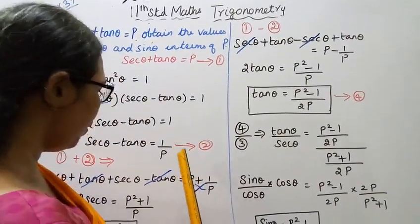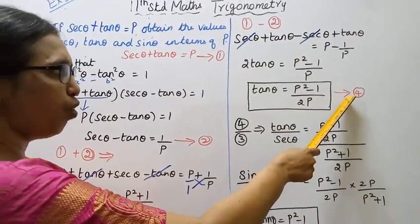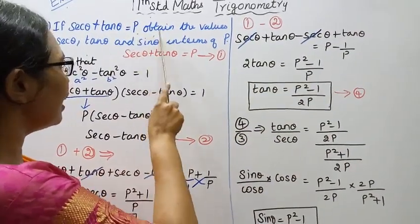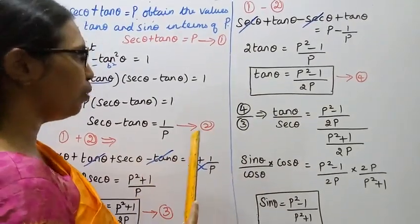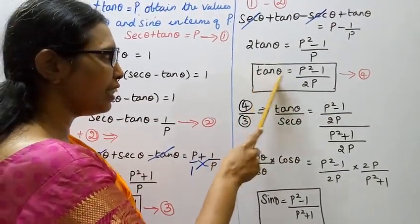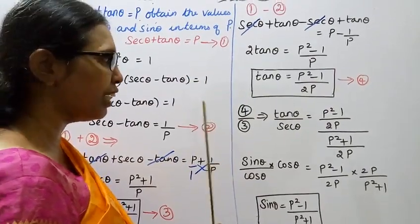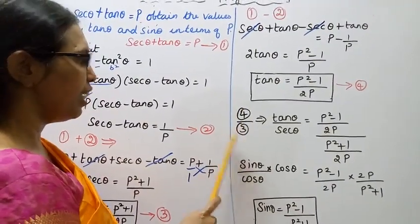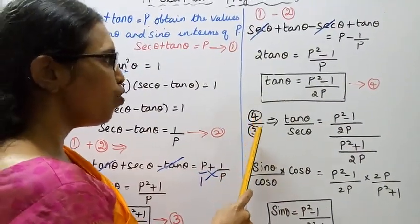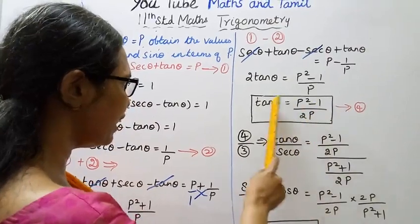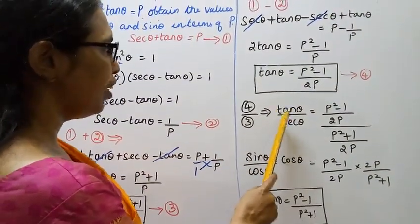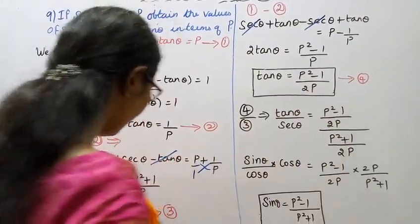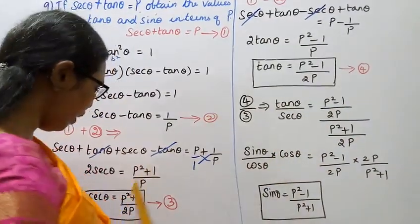Now to find sin θ, we know tan θ equals sin θ by cos θ. If we have four by three, then sin θ is four and cos θ is three. Since we have sec θ and tan θ, we can write tan θ by sec θ equals p² minus 1 by 2p divided by sec θ, which is p² plus 1 by 2p.